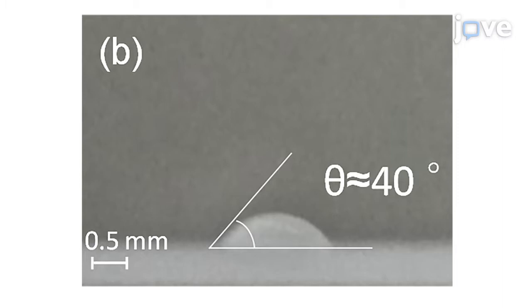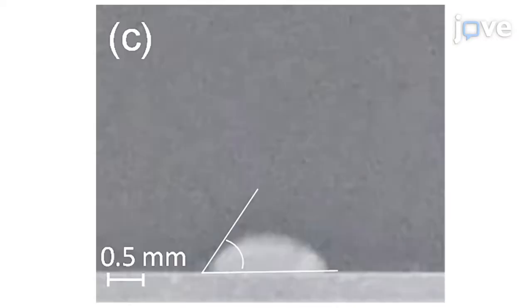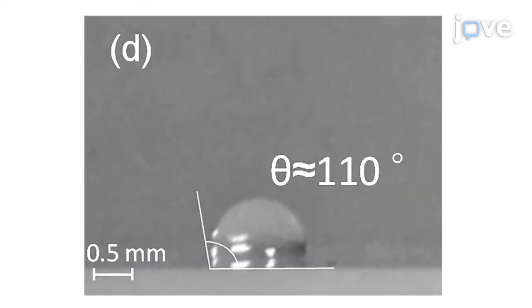This is a microliter droplet of water on a bare surface. It eventually spread into a thin film. A microliter droplet of water on a coated surface persisted.